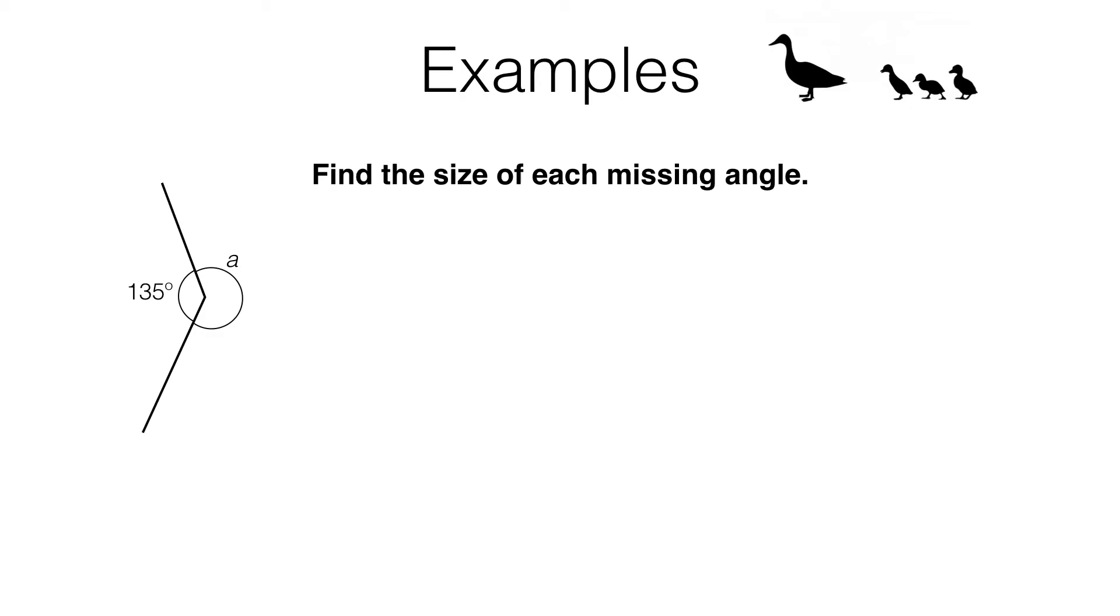In this video we're going to be looking at three angle facts. The first is about angles around a point, the second is about angles at a point on a straight line, and the third is about vertically opposite angles.